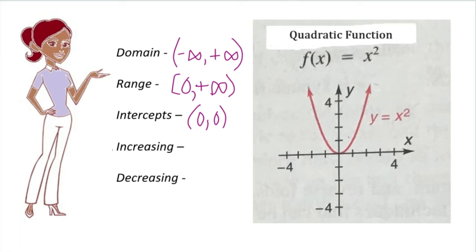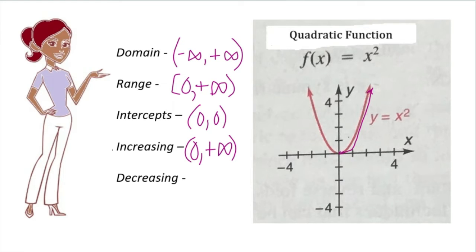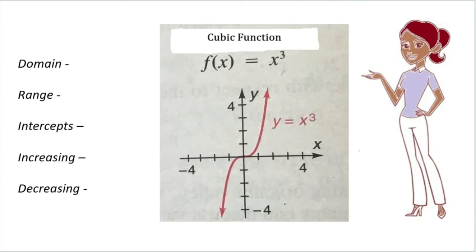There are intercepts at (0, 0). Looking at where the graph is increasing — starting at point zero going up — it is increasing from zero to positive infinity. Where is it going down? Starting on the left side going down, we start at negative infinity and end at zero, so the graph is decreasing from negative infinity to zero. That is the parent function of the quadratic function.